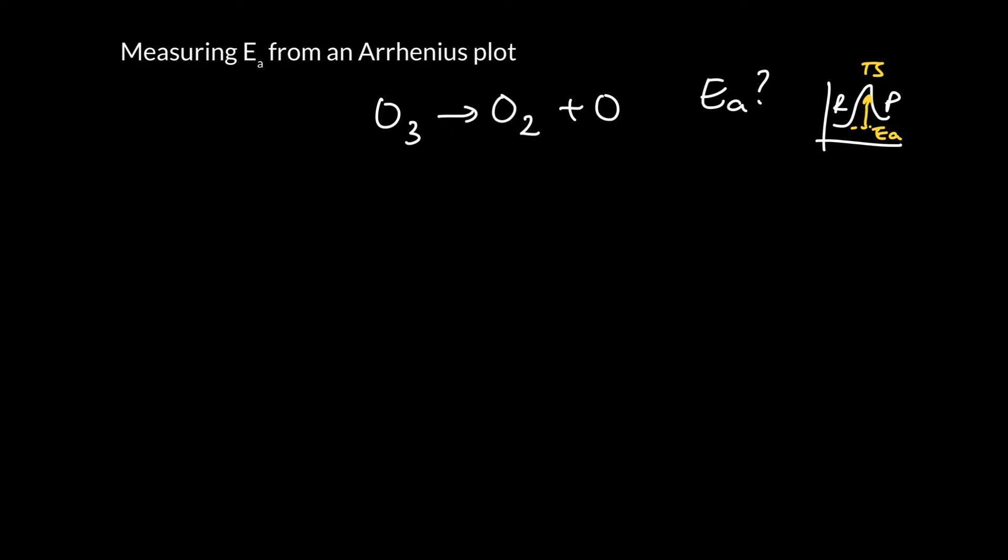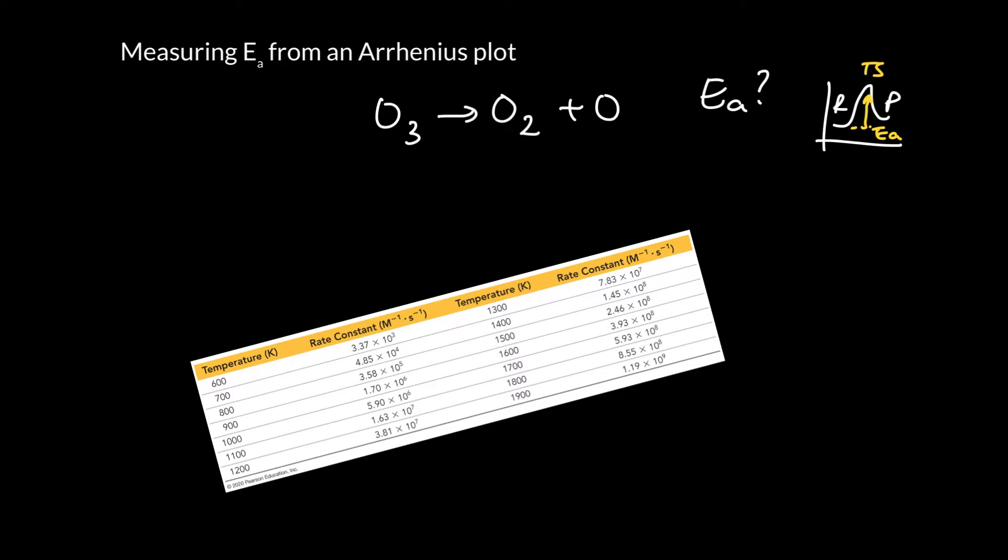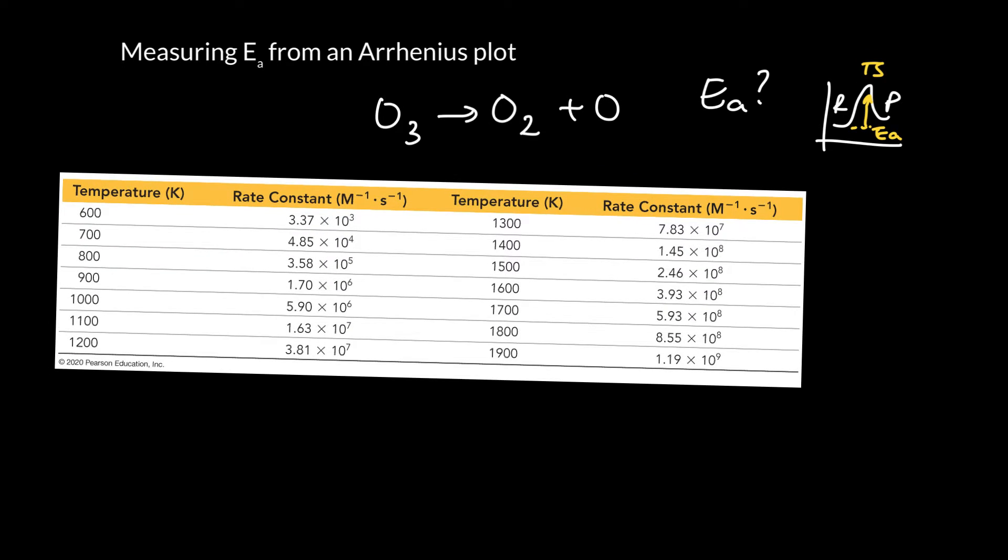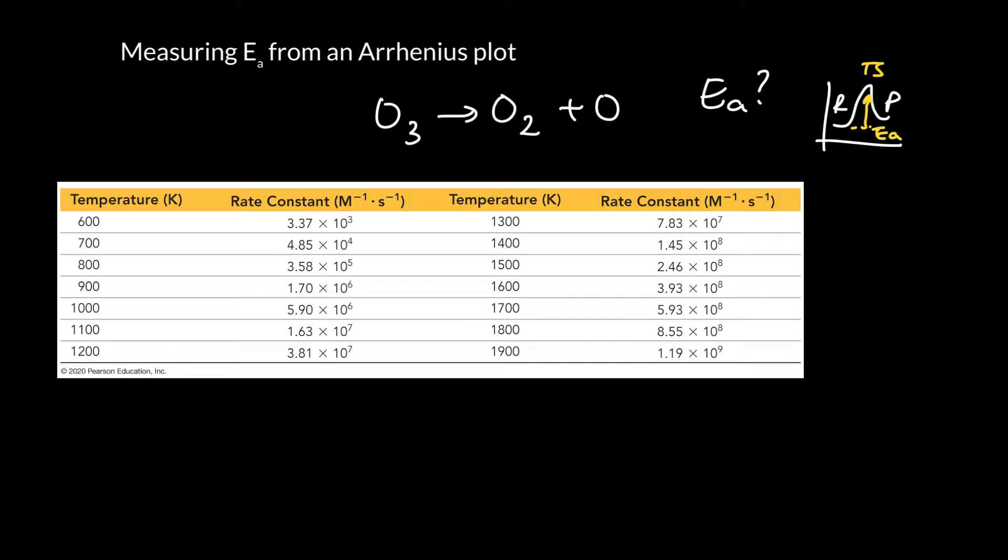So how would we do something like that? So one of the things we can do, and I'll just go ahead and pull this from the textbook, is we can measure the rate of the reaction, and measure the rate constant as a function of temperature. So here's a bunch of data here that I've just pulled from our textbook. So we've run the reaction at temperatures from 600 to 1200 Kelvin. We've determined the rate constant, and we've gone ahead and done it for an additional half a dozen more temperatures, and measured the rate constants.